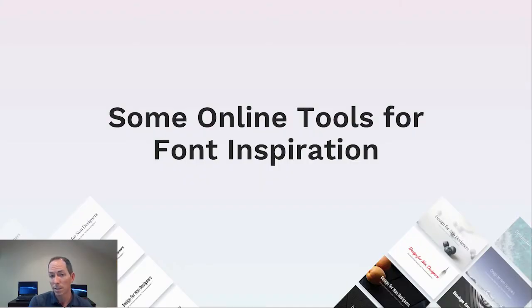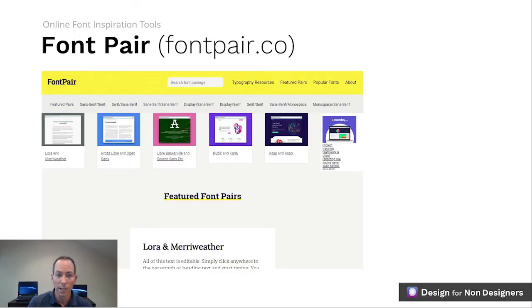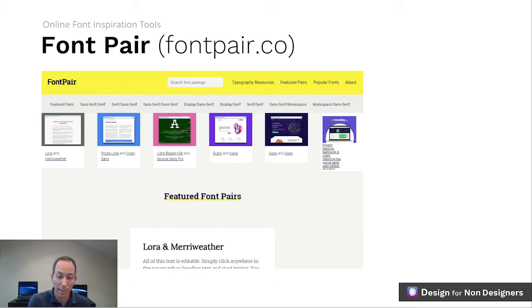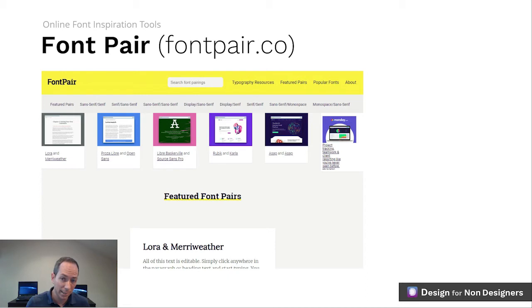Let's talk about two sites in particular that are wonderful for finding great fonts. First up: Font Pair. This site has done all the hard work for you — it's found Google fonts that work great together and categorized them for searching, including featured and popular combinations, as well as different category mix-ups like serif, sans serif, display, and serif. What's especially great is they give you examples of the fonts in use, letting you edit the text to see your own copy in action, and include direct download links for any font you decide to use.